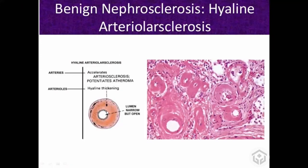Reduced blood supply to the renal parenchyma can lead to focal ischemia. Microscopically, you can see the arteriole with thickened intima and media, a pink hyaline deposition in the media, and a narrowed lumen. In the real picture you can see the narrowed lumen, lots of hyaline, and thickened media and intima — that's hyaline arteriosclerosis.